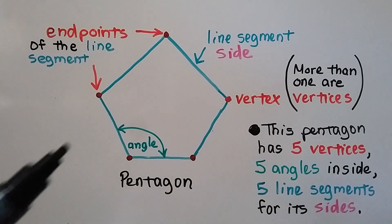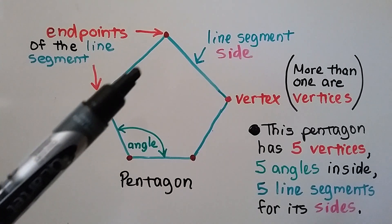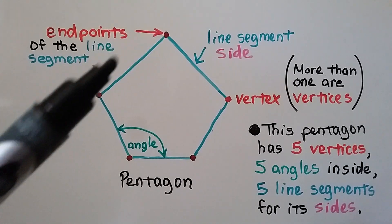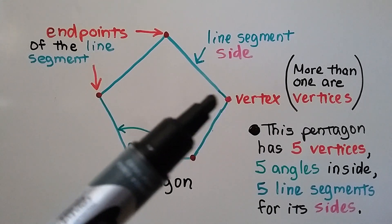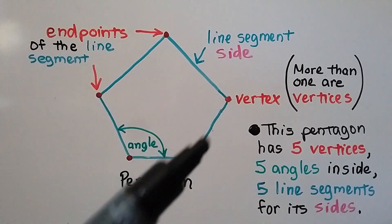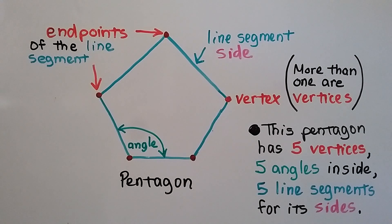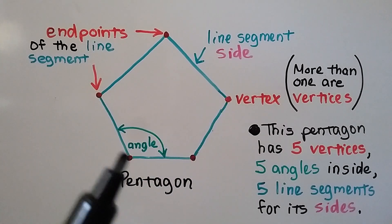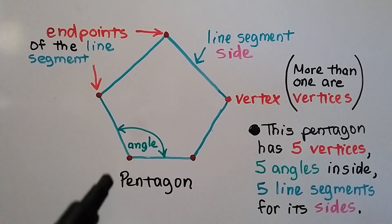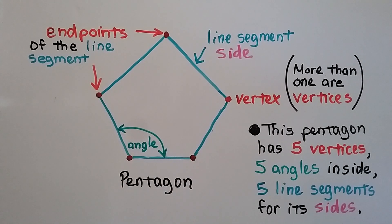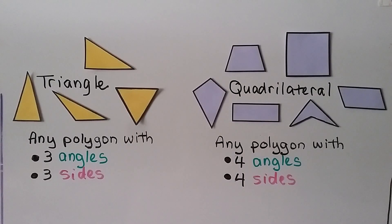Here we have a pentagon. Each side is a line segment between two endpoints. A vertex is where line segments meet, and when you have more than one vertex they're called vertices. This pentagon has five vertices — one, two, three, four, five — it has five angles and five line segments for its sides — one, two, three, four, five.